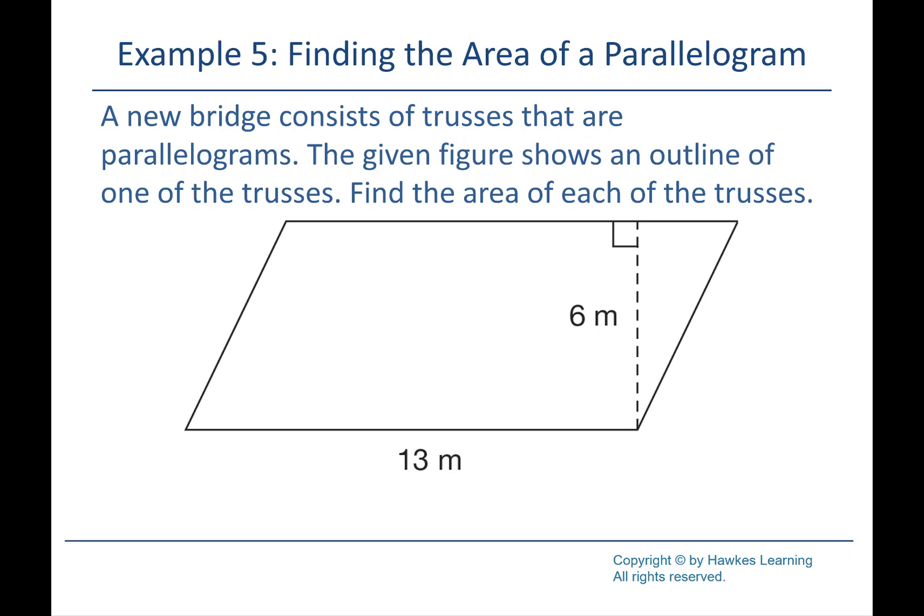We're picking up where we left off with area, perimeter, and circumference — we'll see that in a minute. Before we get going, does anybody have any general questions? Okay, this will be a good warm-up for us. We've got a bridge that consists of trusses that are parallelograms, and we've got an outline of one of the trusses. Find the area of each of the trusses.